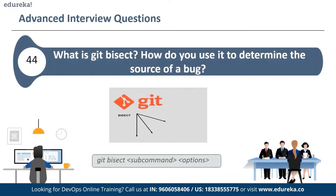The next question is: what is git bisect? How can you use it to determine the source of a bug? Git bisect is used to find the commit that introduced a bug by using a binary search. The command syntax is: git bisect <subcommand> [options]. It uses a binary search algorithm to find which commit in your project's history introduced a bug. You tell it a bad commit known to contain the bug, and a good commit known to be before the bug was introduced. Git bisect then picks a commit between these two endpoints, asks you whether it is good or bad, and continues narrowing the range until it finds the exact commit that introduced the change.